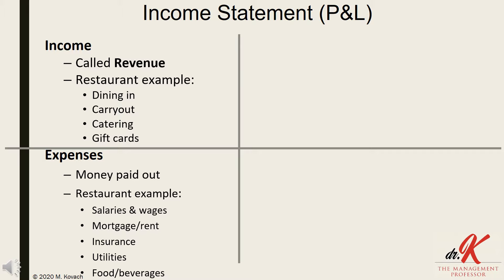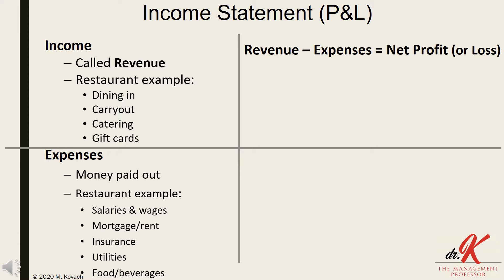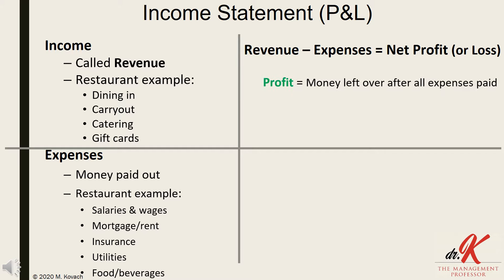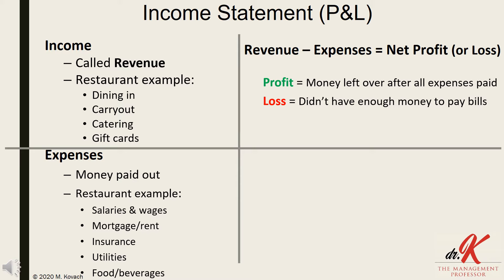As we saw in the previous slide, the bottom line is revenue minus expenses. We have a profit when we bring more money in than we pay out in a given period, and we take a loss when we are paying out more than we are bringing in. Businesses can't operate in this state very long, so it's important to forecast your income and expenses in order to best manage big swings.